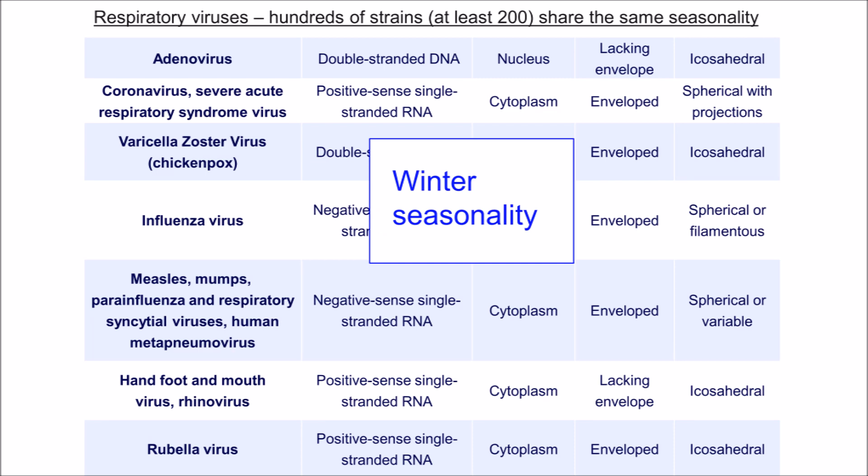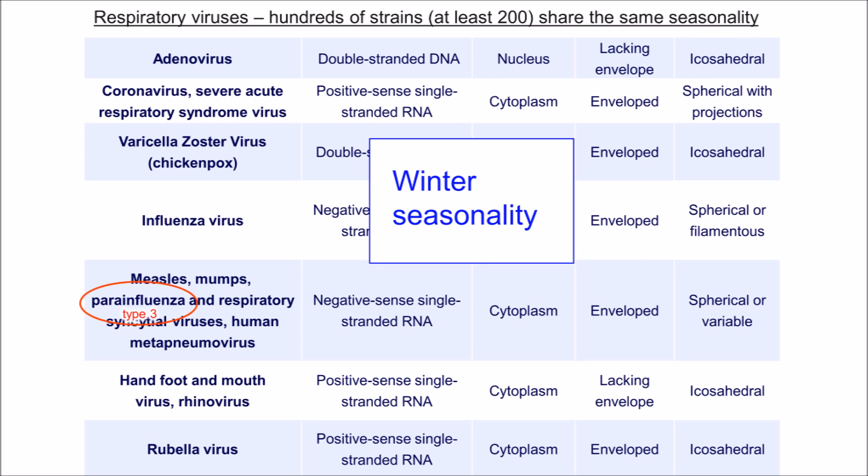This winter seasonality applies to virtually all respiratory diseases, even diseases caused by completely unrelated species — there's just one exception that I know of. But it doesn't apply to other viral diseases, such as polio and rabies, which are spread by other routes and often have summer seasonality.